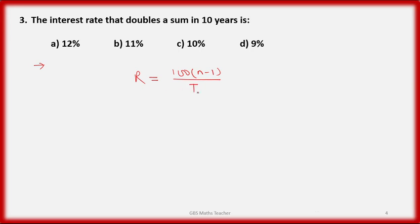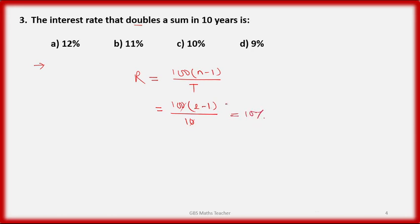Where r is the rate, t is the time, and n means double, triple, or four times the sum. Applying the formula: 100 × (2 − 1) / 10 = 10 percent. That must be the answer.